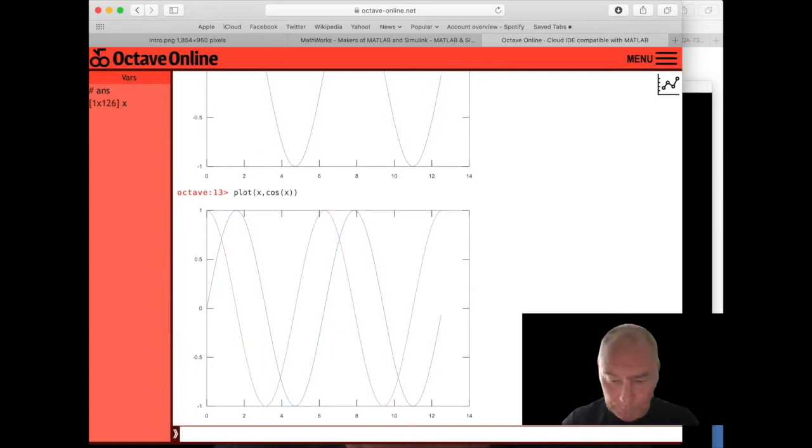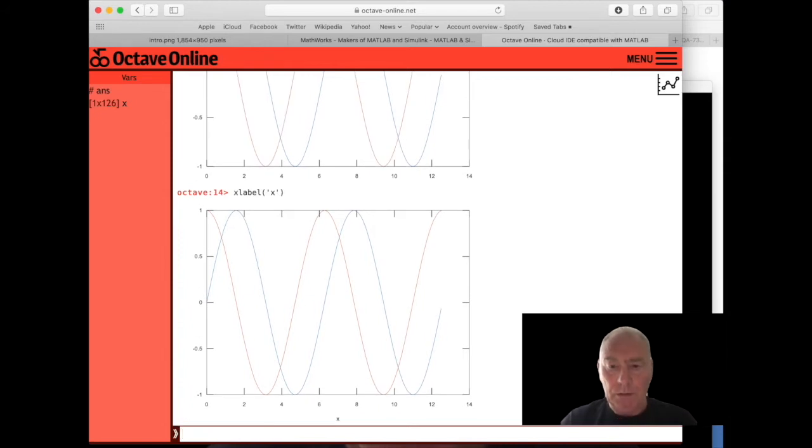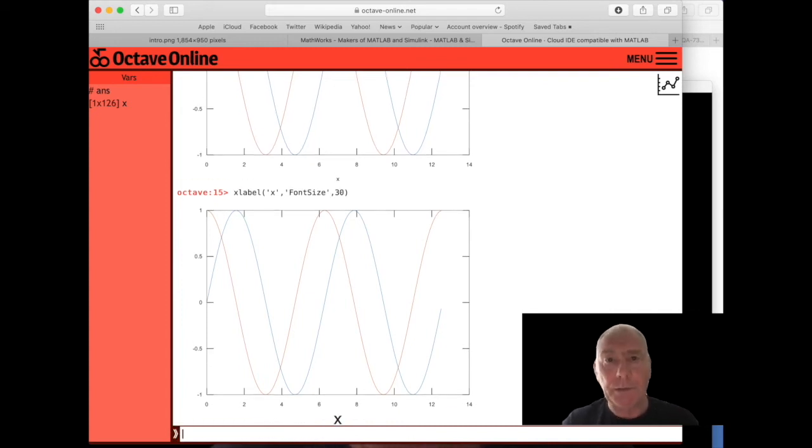We can label our axes because this is something we should always do. It's a bit small though, isn't it? You can't really see that label down there. The label for the x-axis. So let's use up arrow, get the previous command back, and let's ask it to be done in a bigger font size. Let's say 30. That's the size of the font that's used for the label. Now that's better. Now we can see that nice clear x.